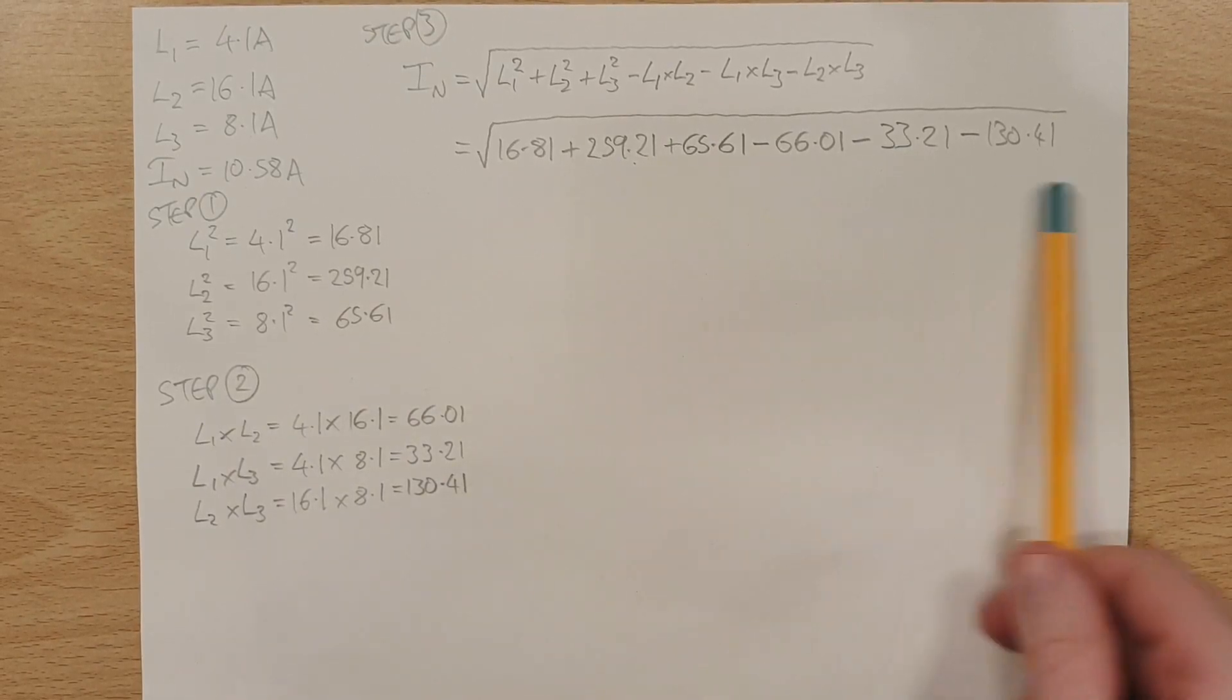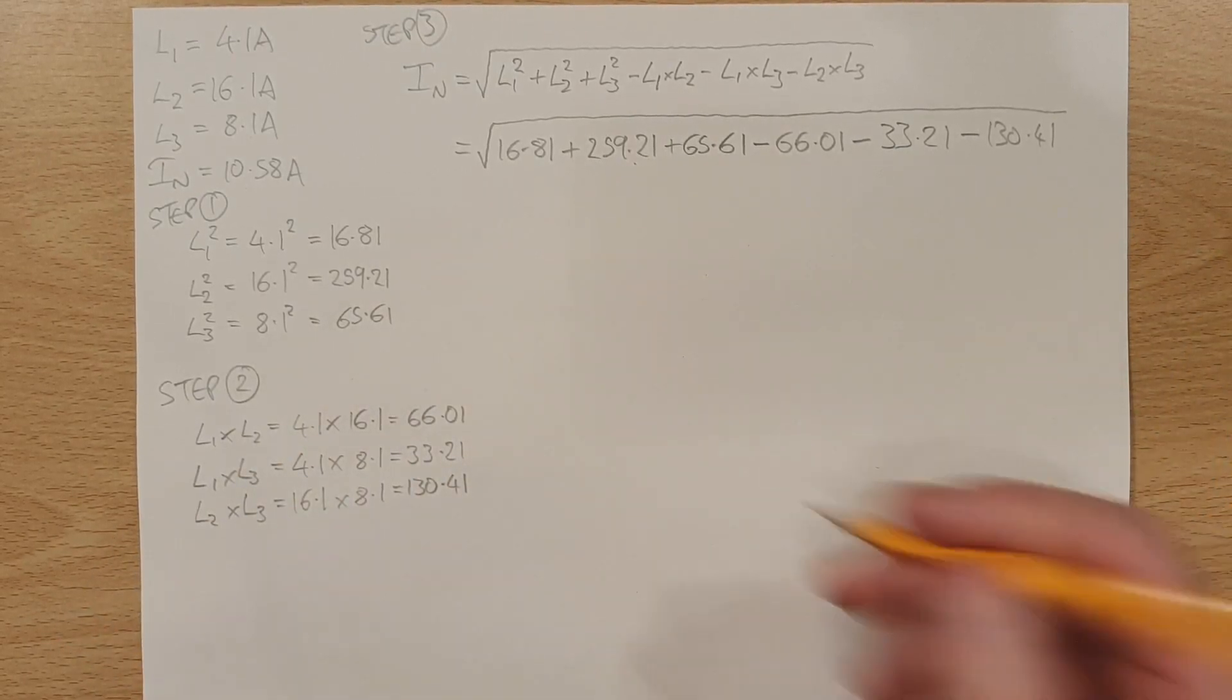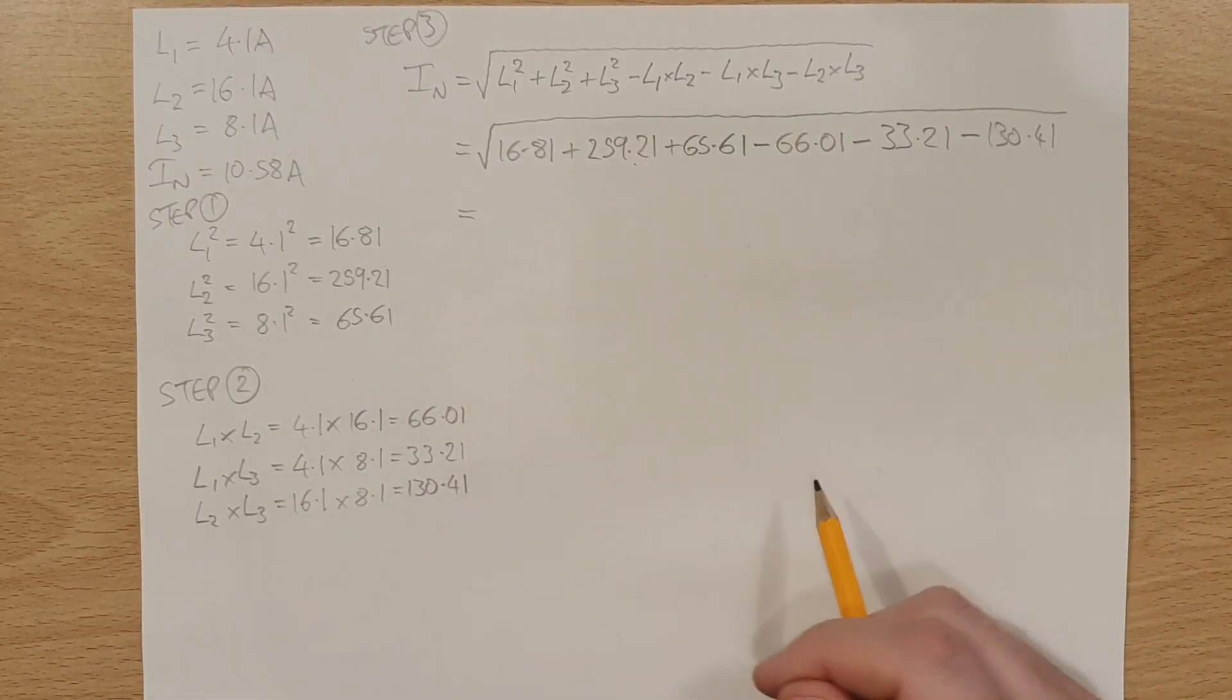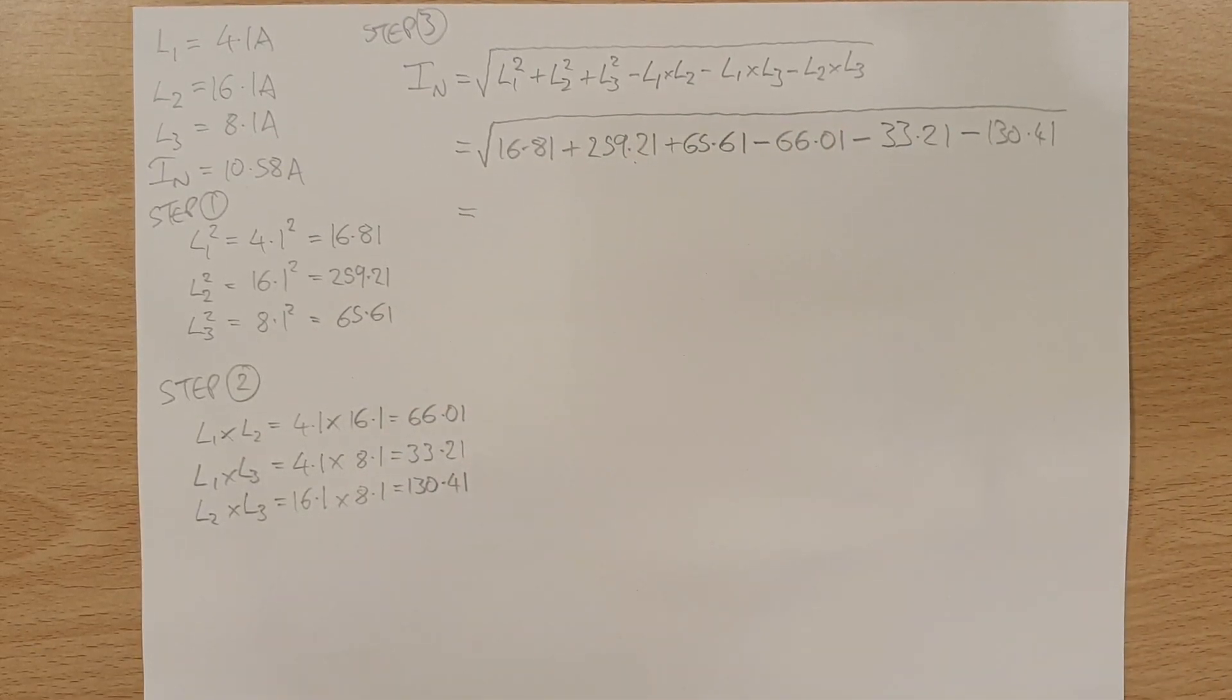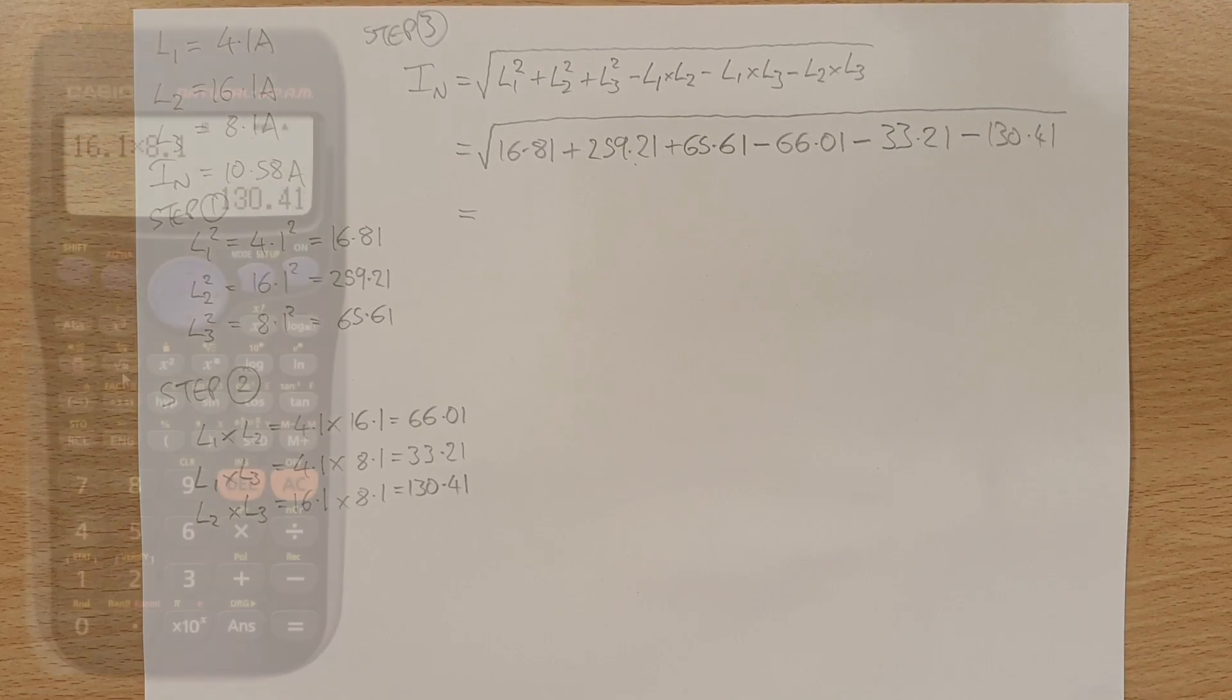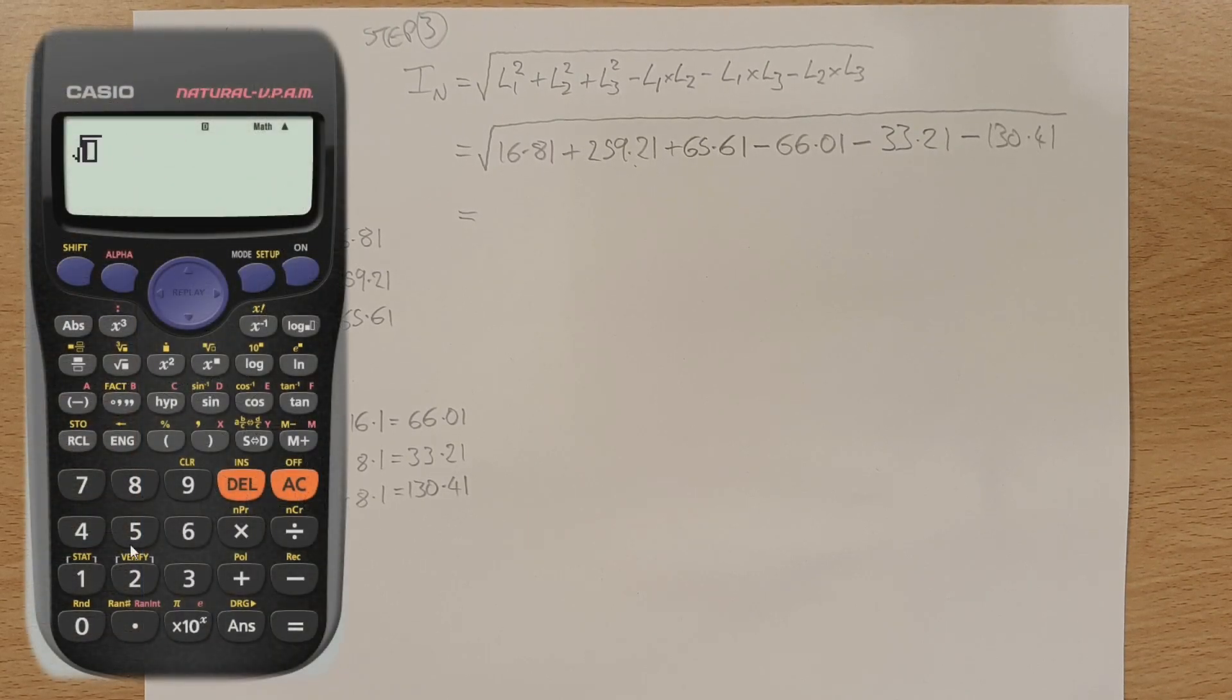Again, looks quite intimidating. In reality, it's really not because all we're doing is just adding and subtracting a load of numbers and then square rooting it. So at this stage, we've kind of got a couple of options here, but I quite like just to volley into the calculator in one hit. So we're going to press the square root button. And then we just put the numbers in 16.81.